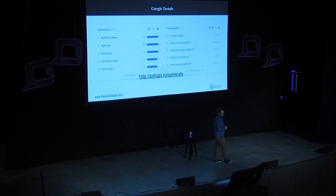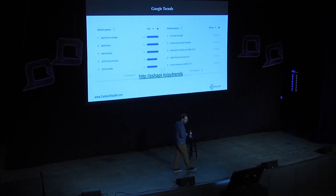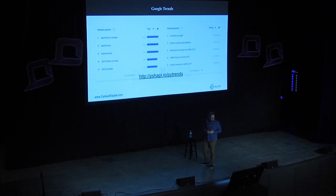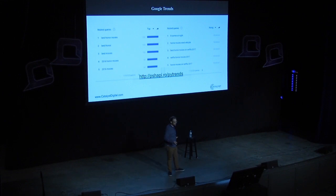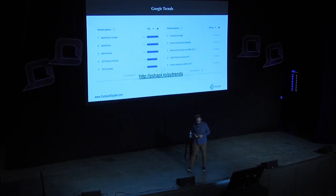Google Trends — beyond just seeing which is the more popular term, their related queries and rising queries are great sources of content you should be thinking about making. 'Best horror movies' is very related to horror movies. People want to know what the best horror movie is, what the best horror movie was in a certain year. Rising queries show people talking about specific movies like 'It Comes at Night' and searching for the best horror movies on Netflix in 2017. All ideas for content on a horror movie blog.